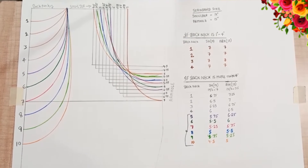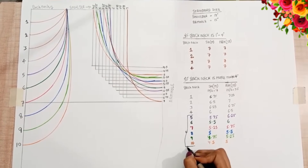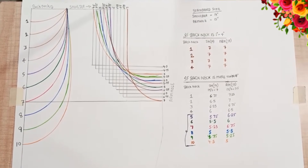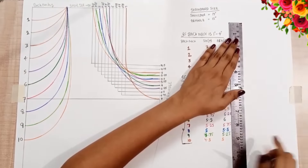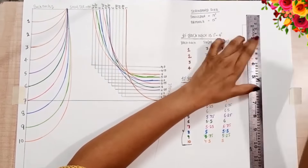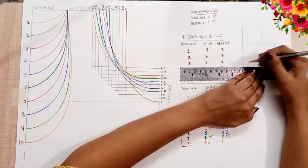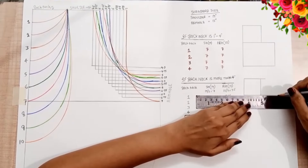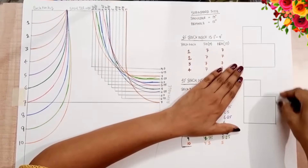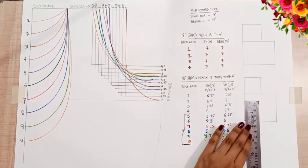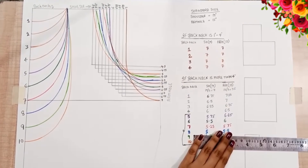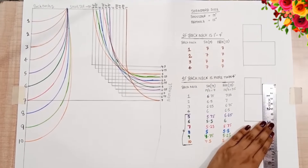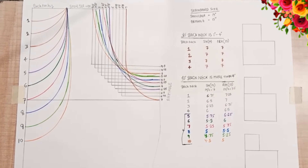1 to 4 inch back neck uses this pattern. 5 to 10 inch back neck uses this pattern. So friends, I have told you that when the back neck is deep, then the shoulder and armhole will be made accordingly. But when you make a dress, the front and back armhole are both made. The drafting pattern is different for different necklines, and I will tell you how to do it.